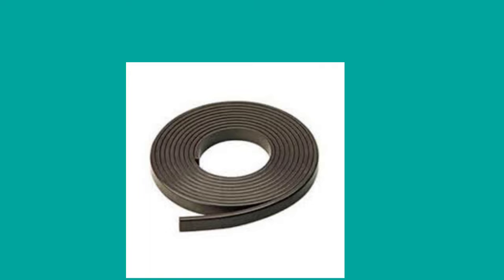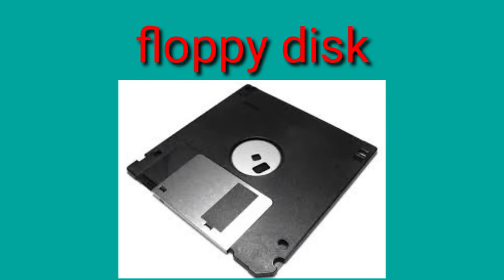The floppy disk is made of flexible plastic coated with magnetic oxide. The magnetic disk is enclosed within a plastic layer called a cartridge. Floppy disks are inexpensive but slow and have limited storage capacity. Data can be lost if the disk is bent or removed while in use. The memory capacity of a floppy disk is 1.44 MB.